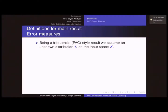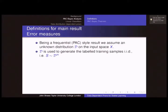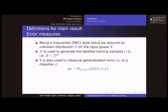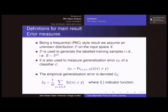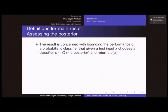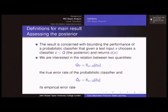It's Frequentist in style. There's another distribution on the input space — the cross-product of input and output space — and we generate samples IID according to that distribution. We have the generalization error we're interested in: the probability of misclassifying a randomly generated test point. That's the thing we want to bound. There's also the empirical error as the empirical version. We're not thinking of a single classifier, but a distribution of classifiers. The performance we bound is: for a test point x, we generate one of our classifiers according to the posterior distribution and return that value.